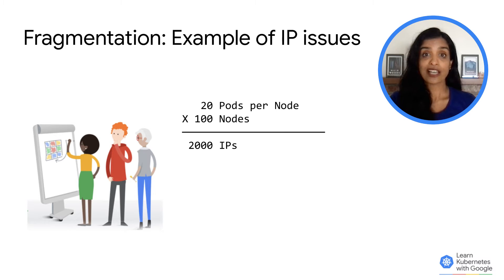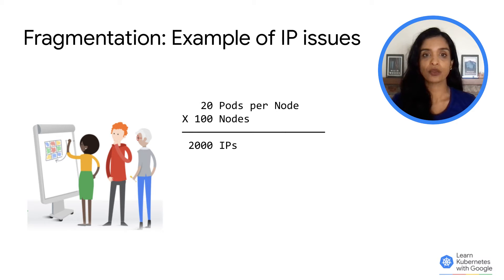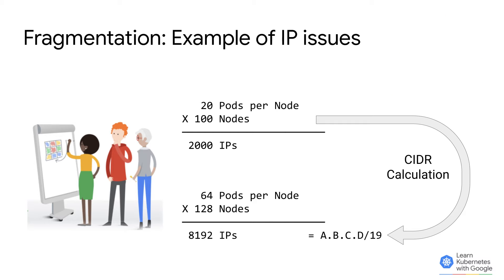You would need a /24 for the node CIDR. Let's say you're accounting for the number of pods to be 20 on each node. The number of IPs looks like 2,000 are required, but accounting for growth, IP availability, and contiguous CIDR blocks, the impact means you need to claim a /19 for your cluster CIDR. That can be challenging for admins to assign for multiple clusters in an IP-fragmented environment.